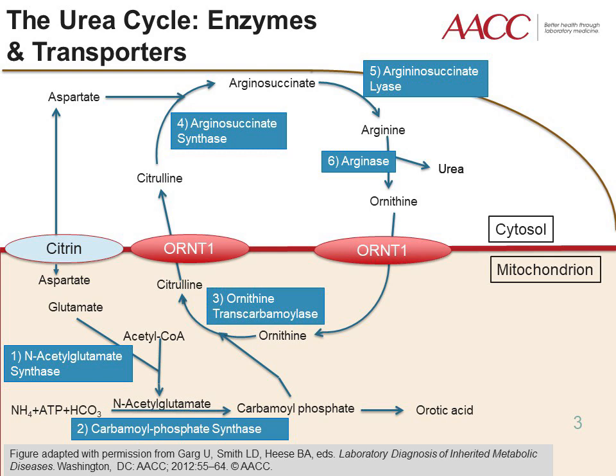The cycle starts in the mitochondria when glutamate and acetyl-CoA are converted to N-acetylglutamate by the N-acetylglutamate synthase enzyme. Carbamoyl phosphate synthase, or CPS, catalyzes the conversion of ammonia, ATP, and bicarbonate to carbamoyl phosphate. Carbamoyl phosphate can be converted to orotic acid. Orotic acid is an important diagnostic marker for the distal urea cycle defects.